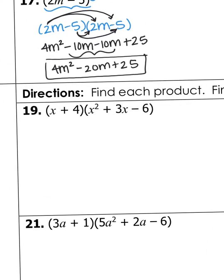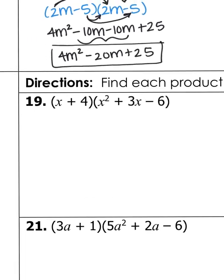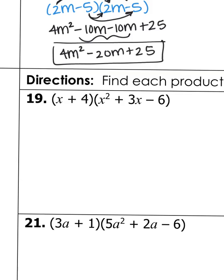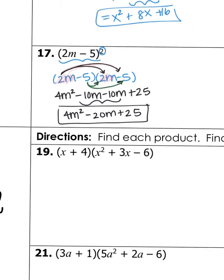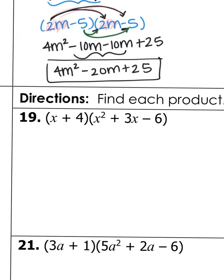The last part is multiplying a binomial times a trinomial — we can no longer use FOIL. The goal is the same: every term in the first binomial must be distributed to every term in the second. Just like how 2M got multiplied to both terms and negative 5 got multiplied to both terms, here you distribute each term through the entire trinomial.